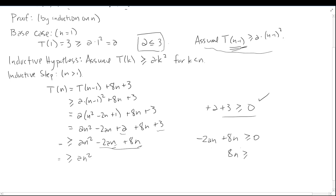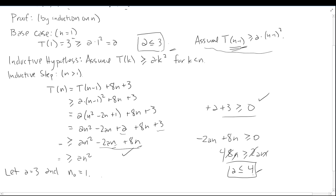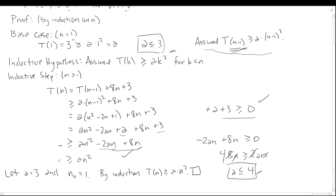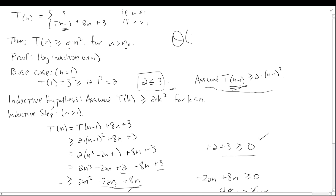Solving −2an + 8n ≥ 0: cancel the n's, and we get a ≤ 4. Combined with a ≤ 3 from the base case, we pick a = 3 and n₀ = 1. By induction, t(n) ≥ a·n² is proved — the Big-Omega lower bound is established. Together, we've shown Big-Theta of n². If you want, the closed-form expression for this recurrence was in the previous video — go ahead and tackle that as an exercise. Thanks for watching!